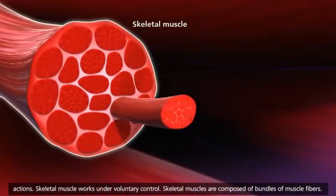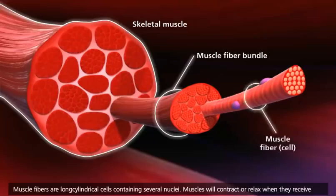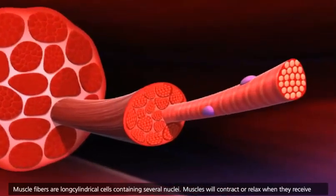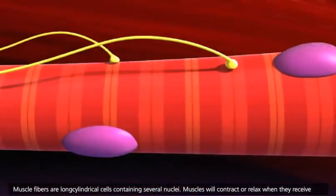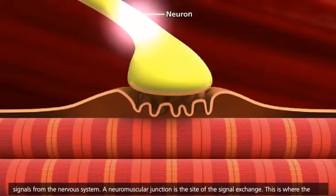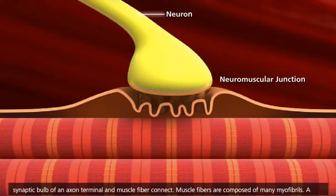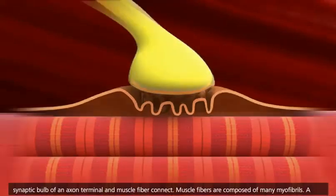Skeletal muscles are composed of bundles of muscle fibers. Muscle fibers are long cylindrical cells containing several nuclei. Muscles will contract or relax when they receive signals from the nervous system. A neuromuscular junction is the site of this signal exchange — where the synaptic bulb of an axon terminal and muscle fiber connect.